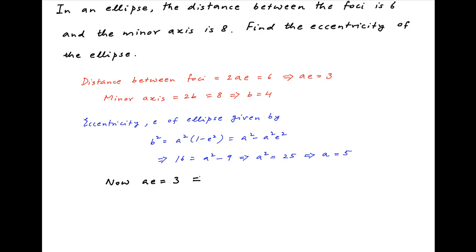We have obtained earlier that Ae is equal to 3. Therefore, E is equal to 3 upon A, and since A is equal to 5, we get the value of E as equal to 3 upon 5.